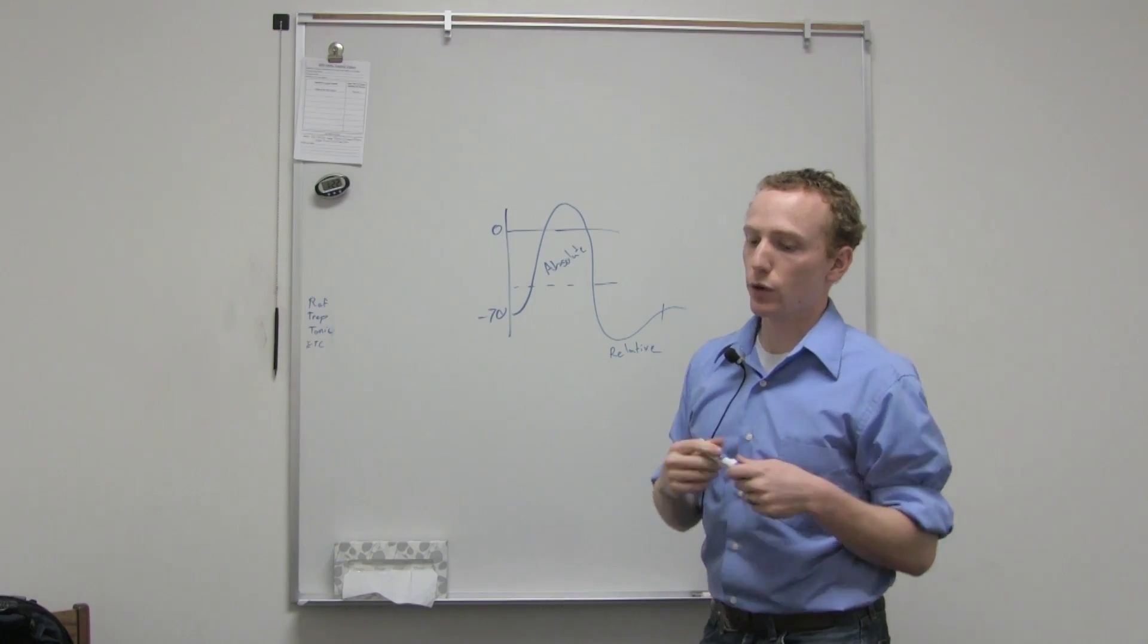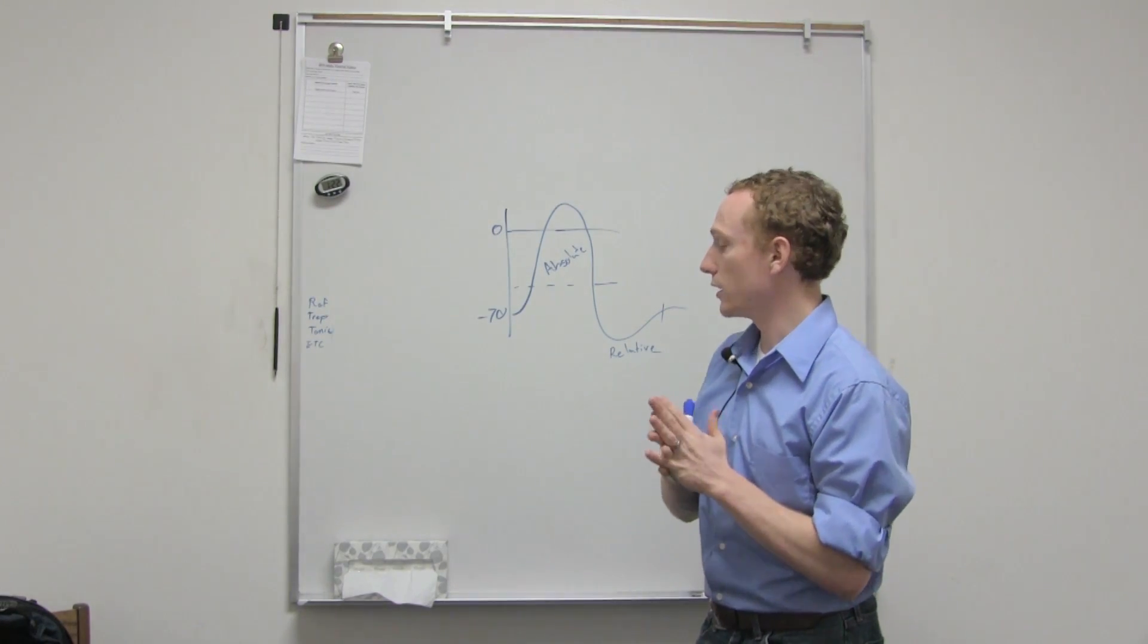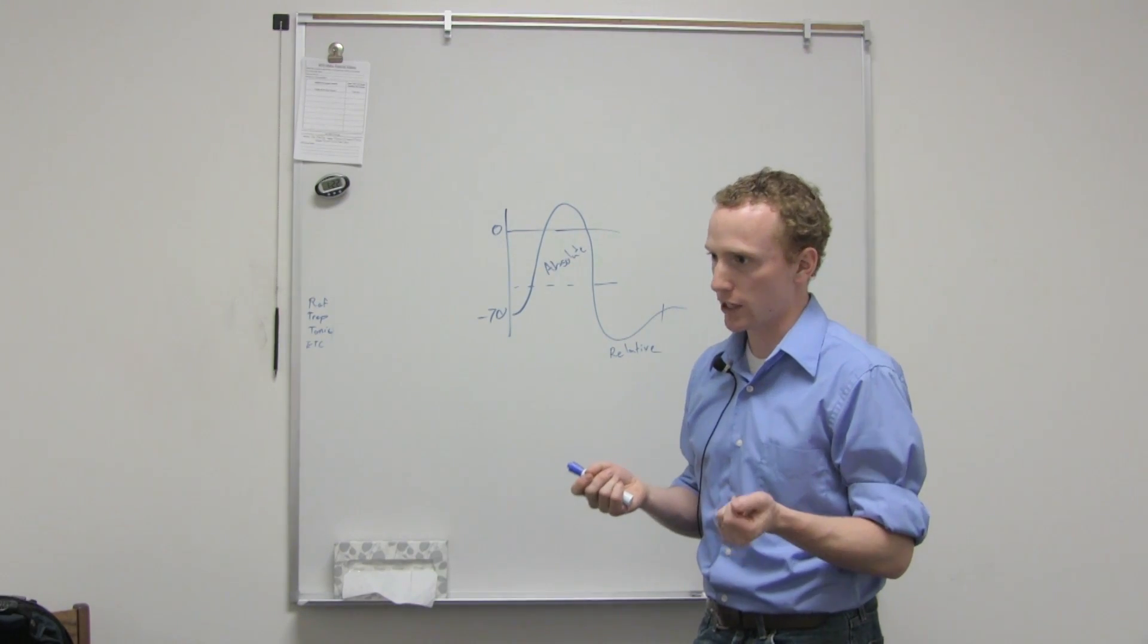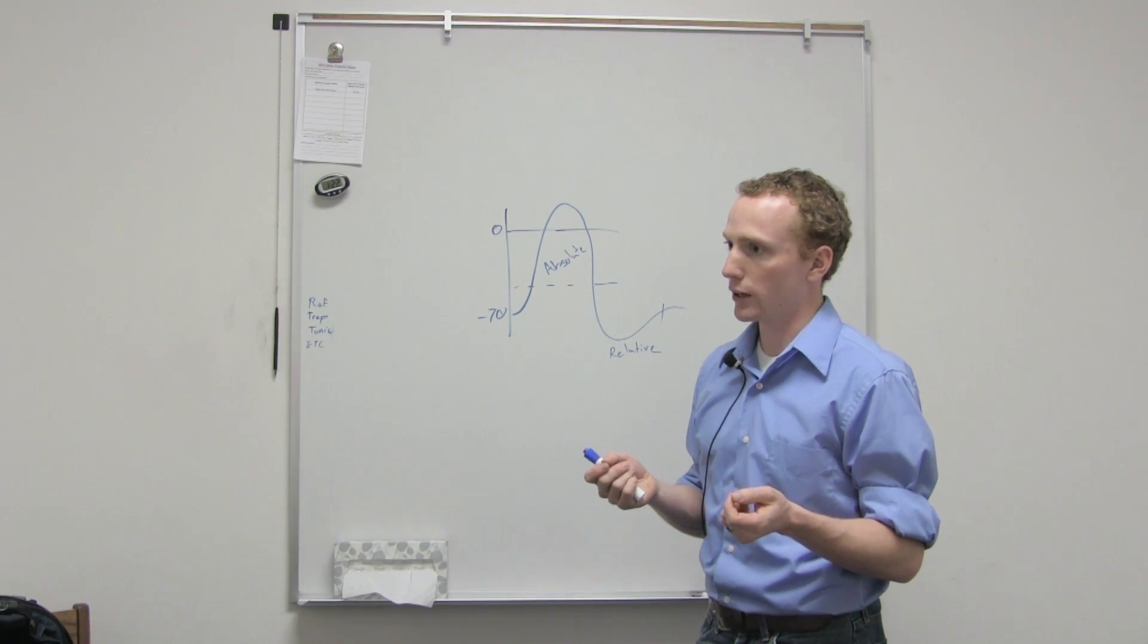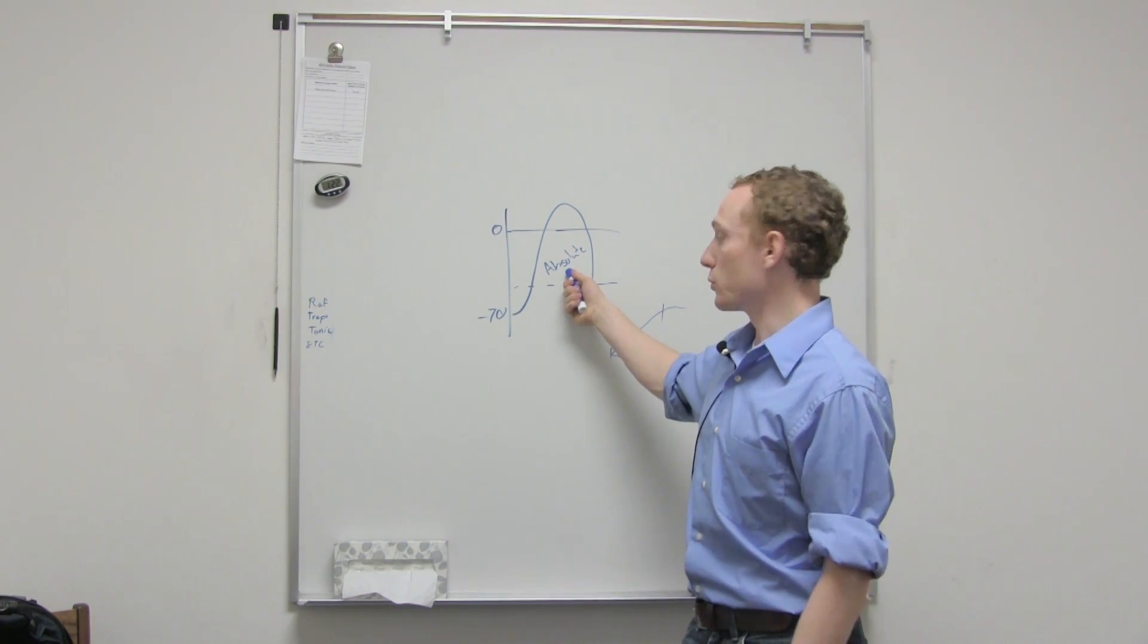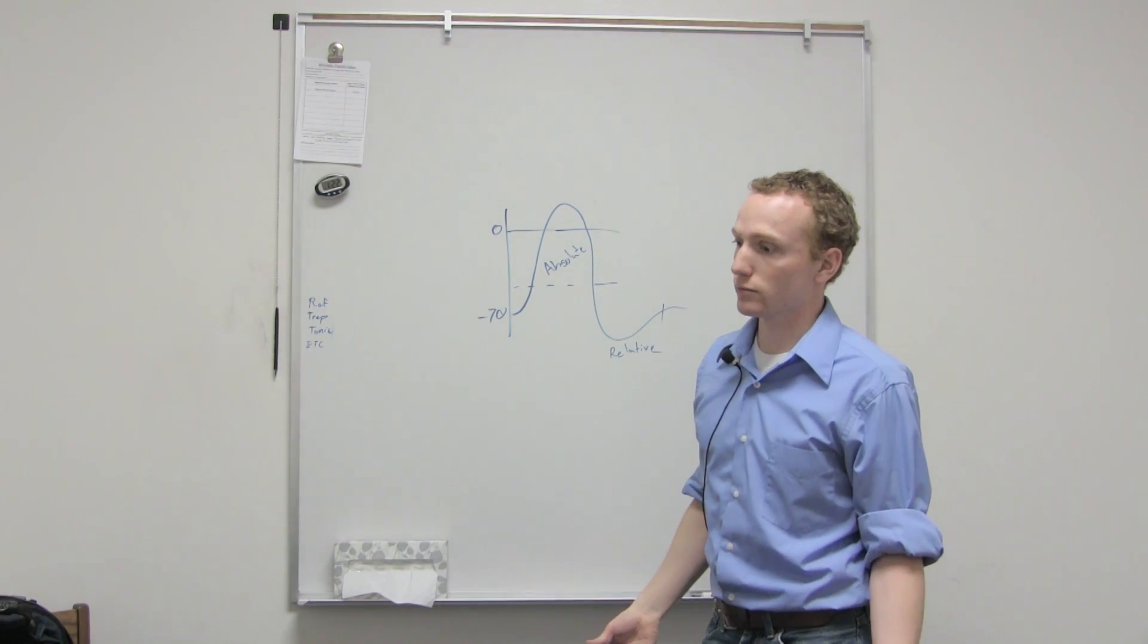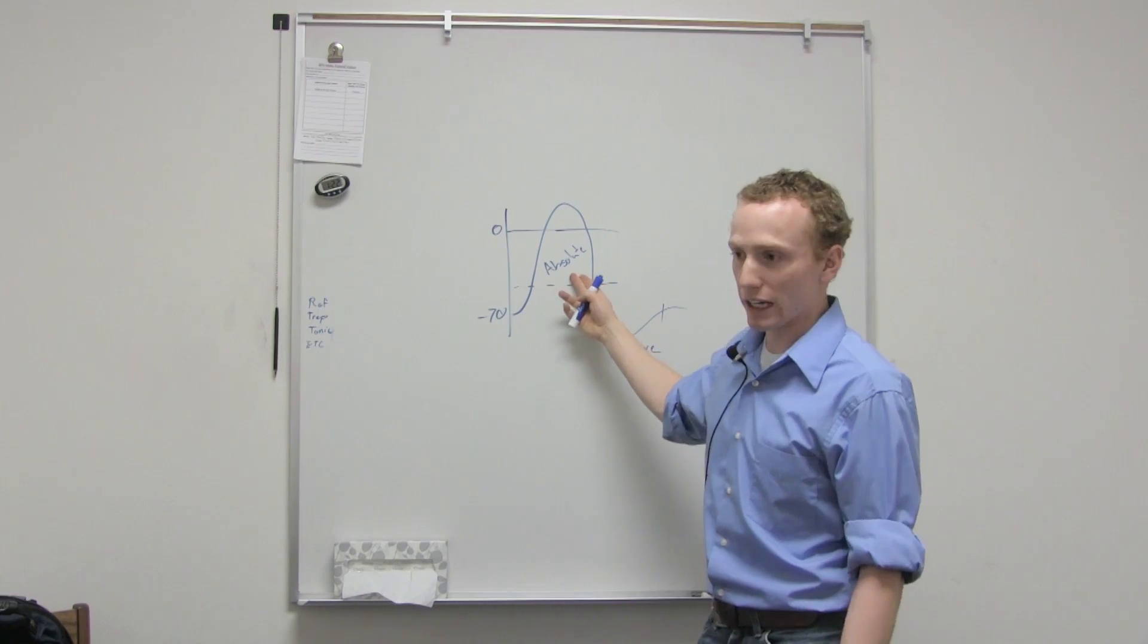So the refractory period is basically saying how long until we can have another action potential happen on that same spot. During the absolute refractory period, we can't have an action potential because we're already having one.